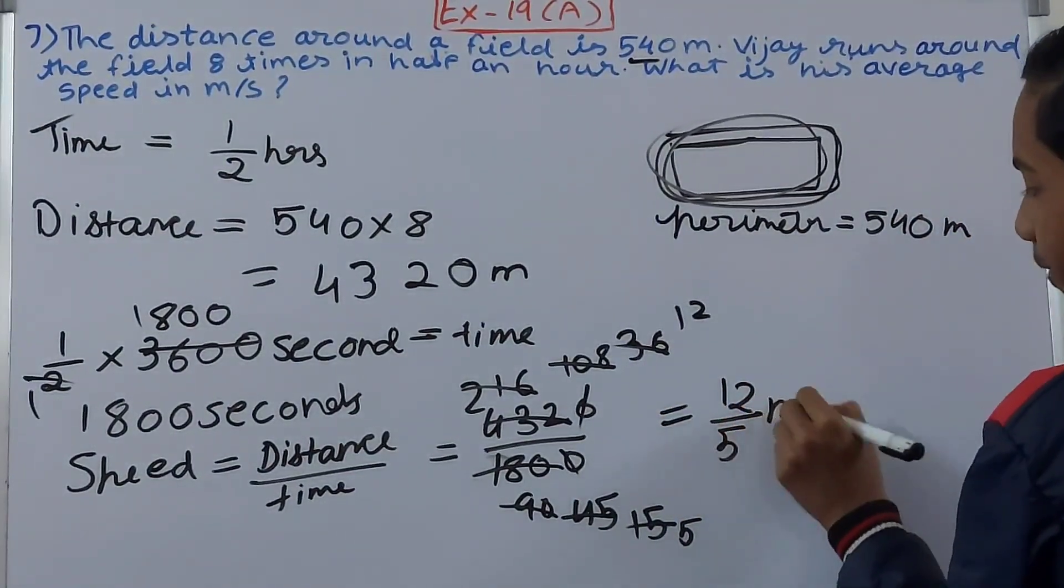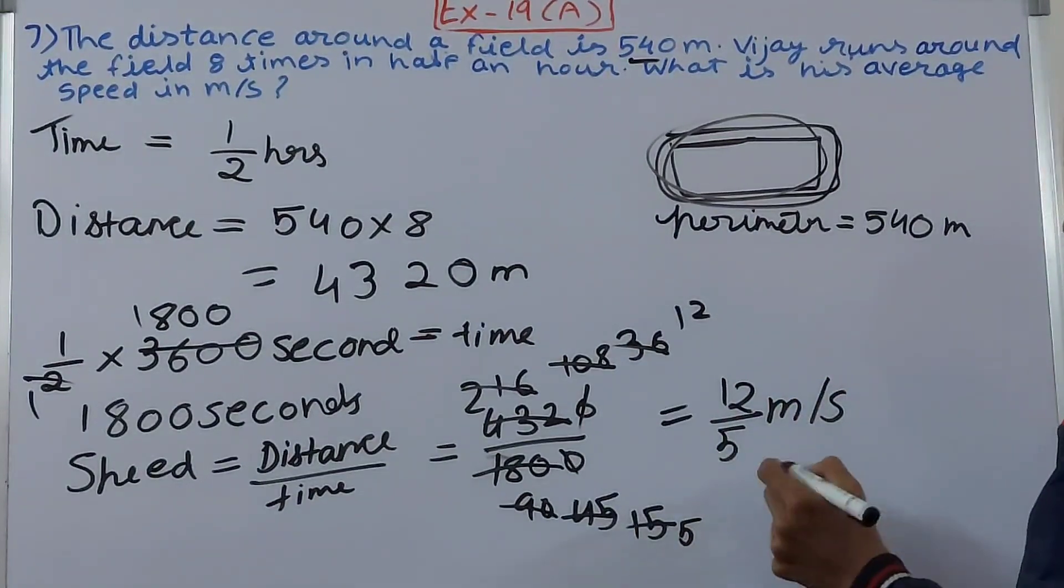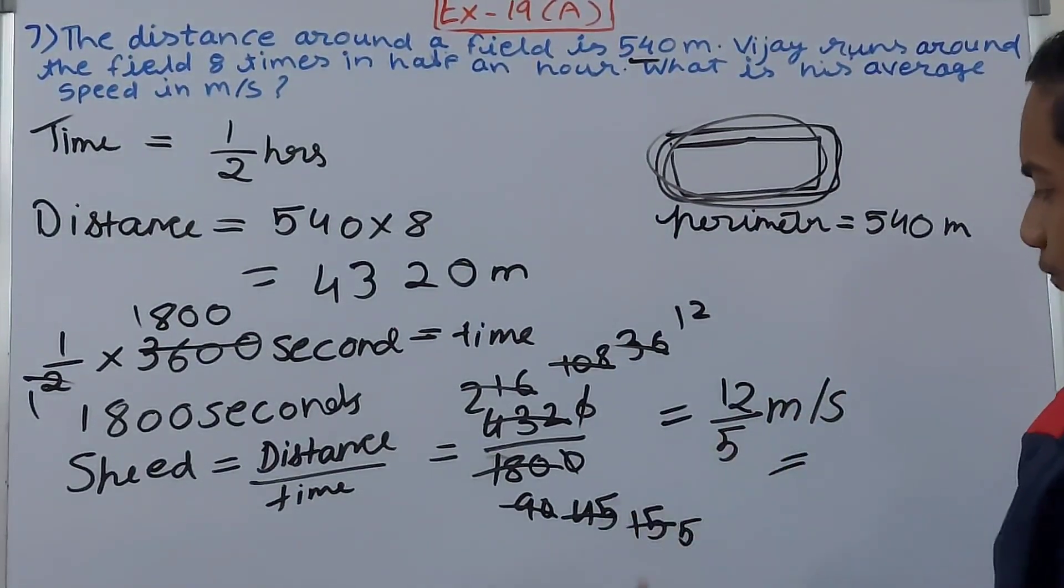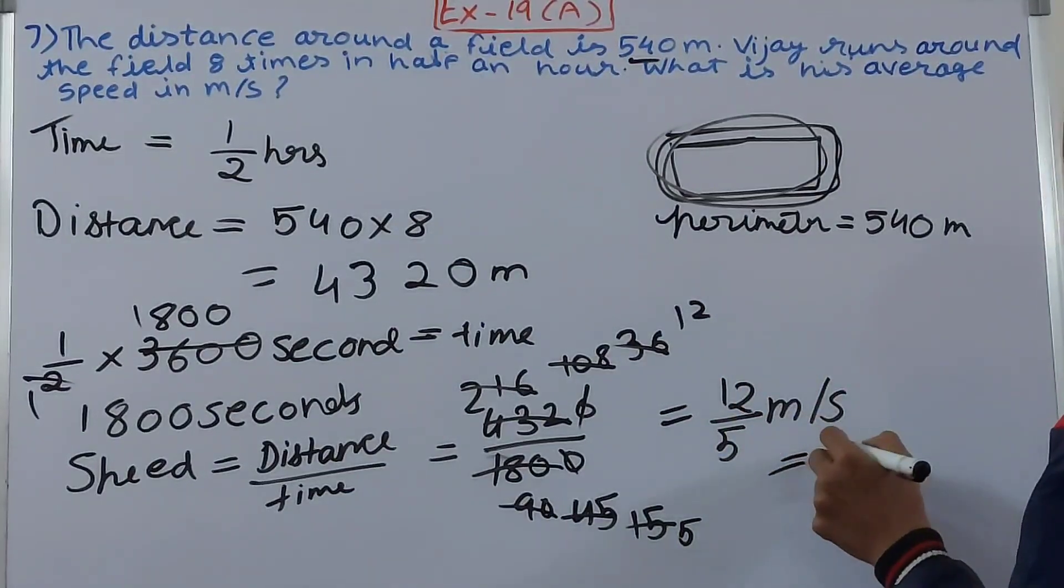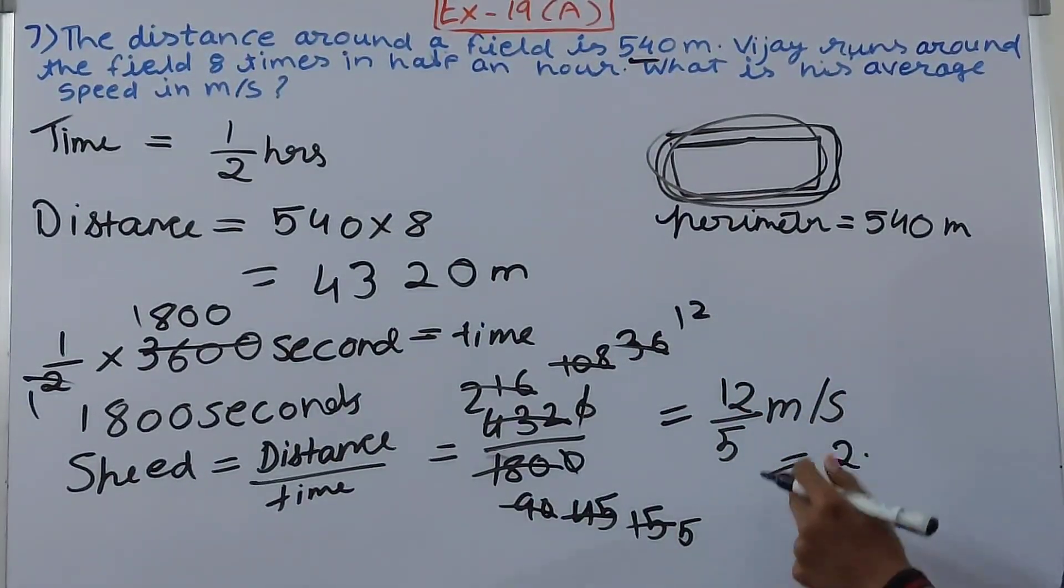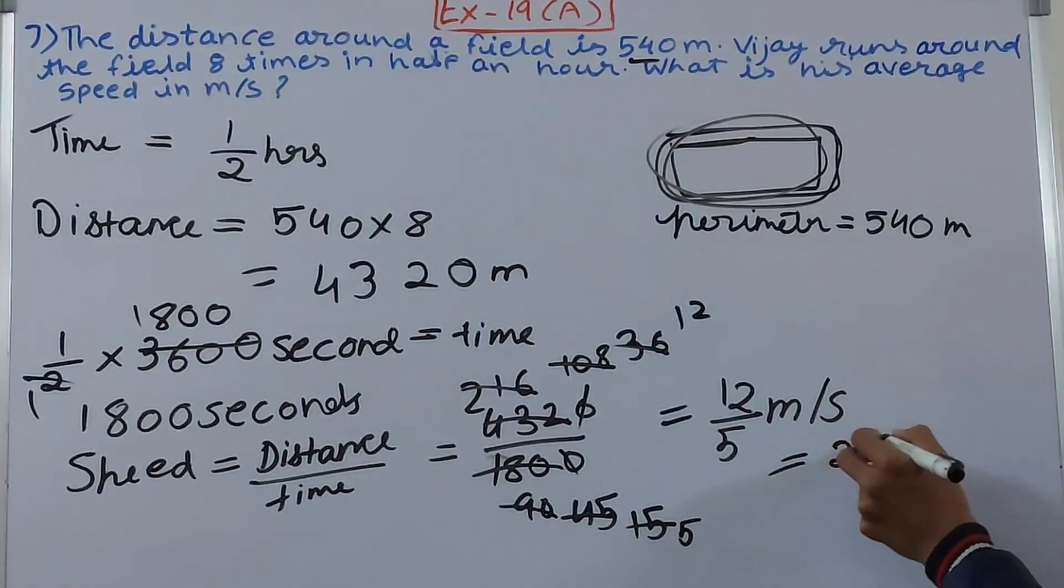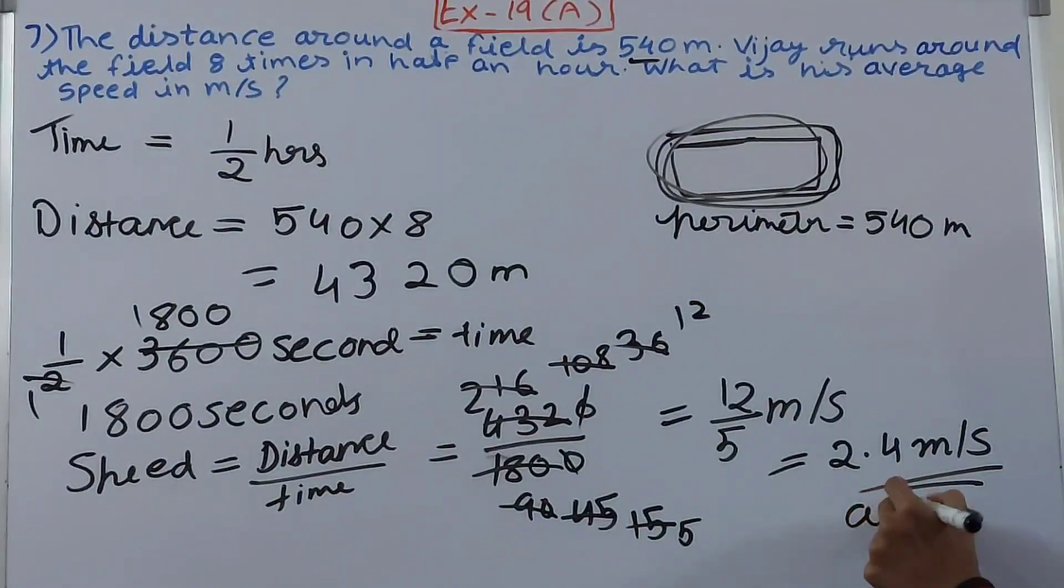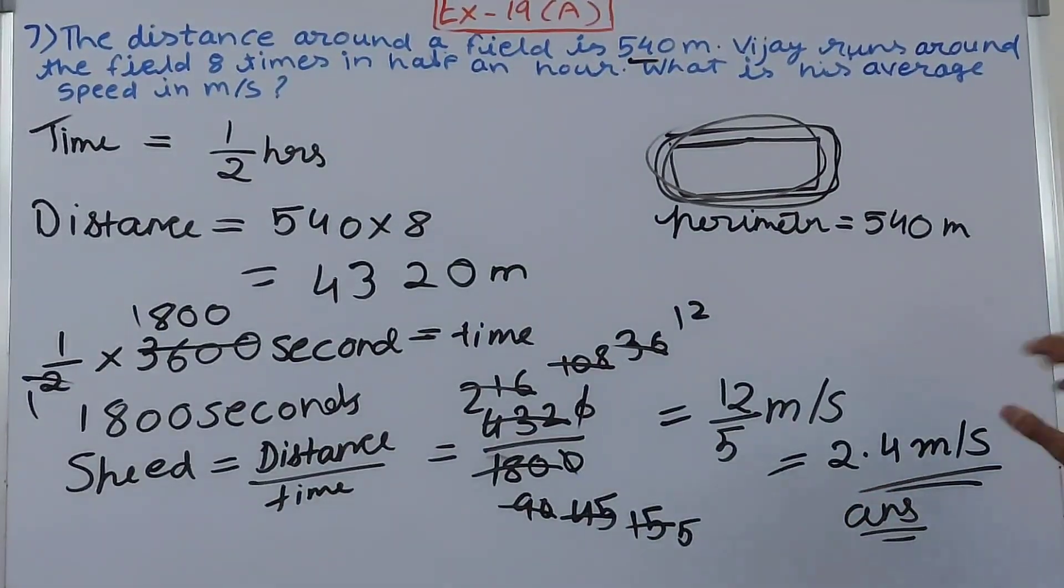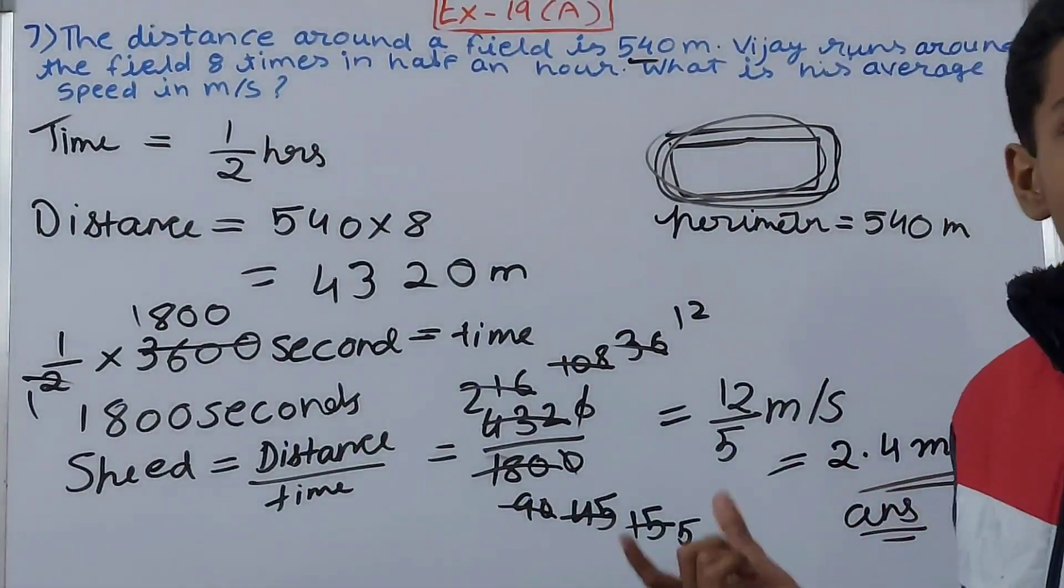So we'll convert this into a mixed fraction or let's say decimal. So previously we did it in a mixed fraction, so now let's do it in a decimal. So 2 point and 2 there. So 2 point - 2, 20. So 4 times. 20 goes 4 times. So 2.4 meters per second becomes your final answer - that is his average speed in meters per second.